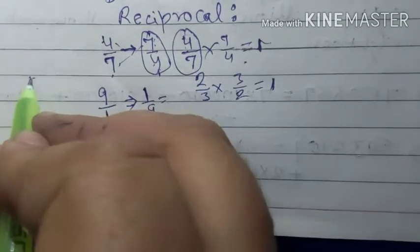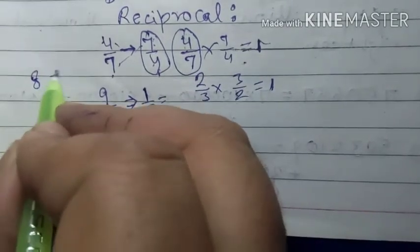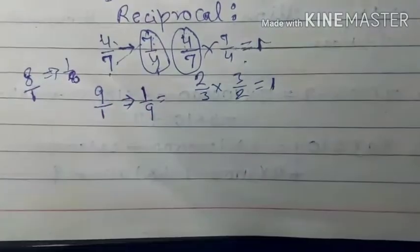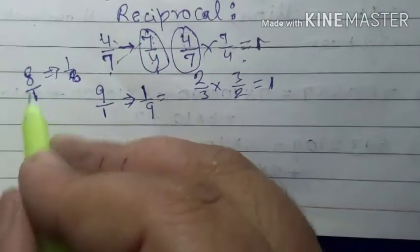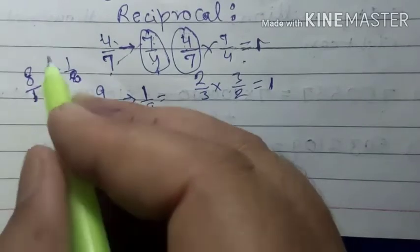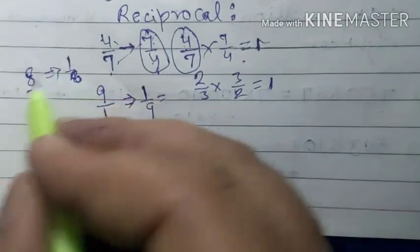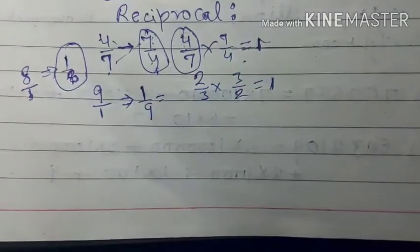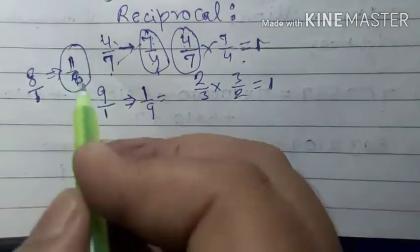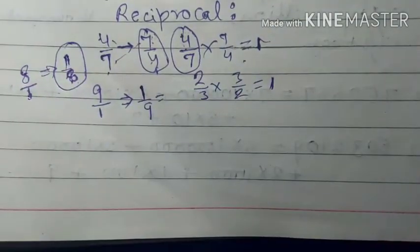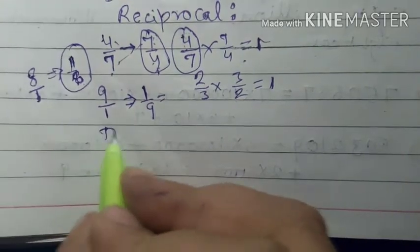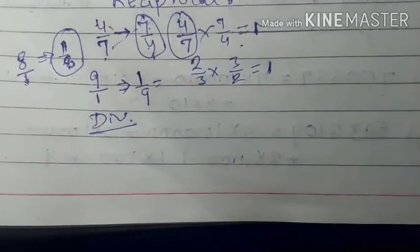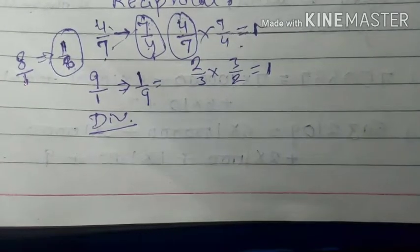जैसे हम ले सकते हैं another example — 8 का reciprocal क्या होगा, that is 1 upon 8, क्योंकि हम 8 को 8 upon 1 भी लिख सकते हैं। 8 upon 1 का reciprocal देखें तो 1 numerator हो जाएगा और 8 denominator हो जाएगा, तो 1 upon 8, 8 का reciprocal होगा। अब 1 upon 8 का reciprocal क्या होगा, that is 8.